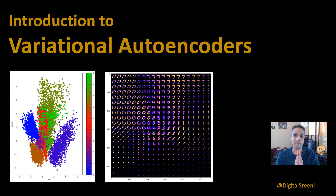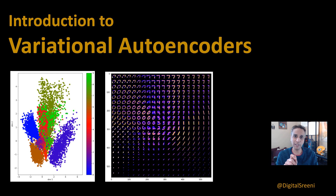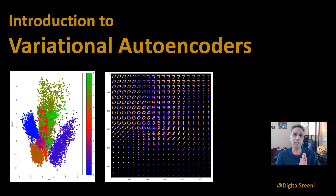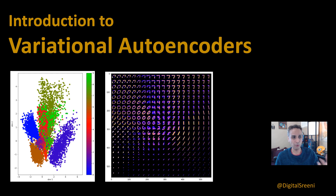Hey guys, in this video let's talk about variational autoencoders. I'm super excited about this, not only because a lot of you asked for this topic but also because variational autoencoders enable a lot of cool applications. For example, by changing the latent vectors slightly, you can add a smile to Mona Lisa or add sunglasses to Mona Lisa. In the next video we'll understand this further by writing a few lines of code using Keras and Python, working on the MNIST dataset.